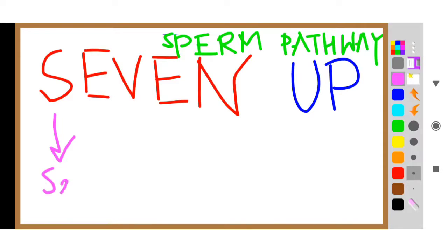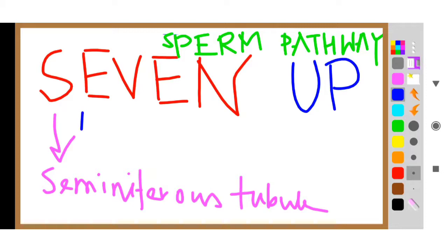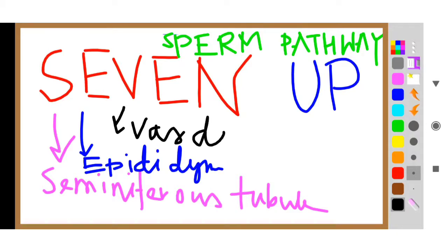Seminiferous tubules. S means seminiferous tubules. E means epididymis. V means vas deferens. Vas deferens. Okay, V means vas deferens.